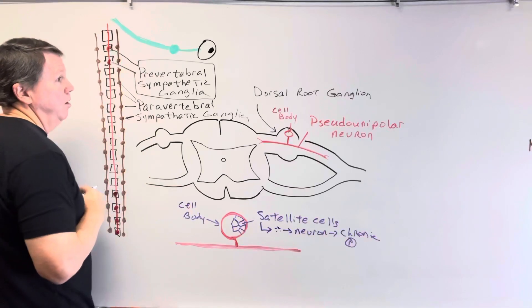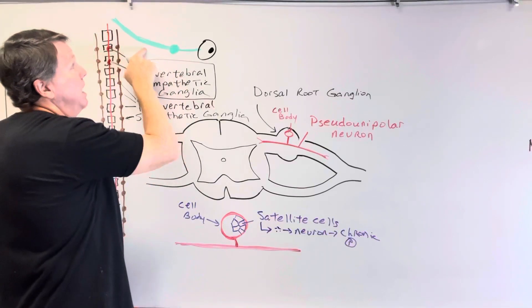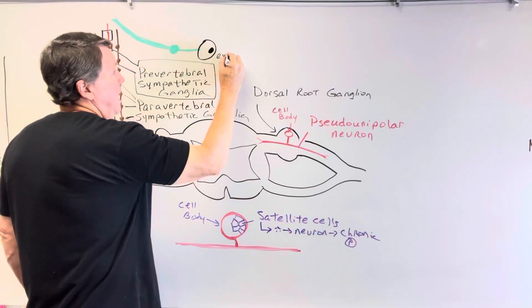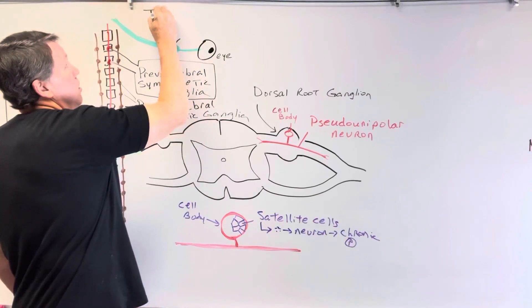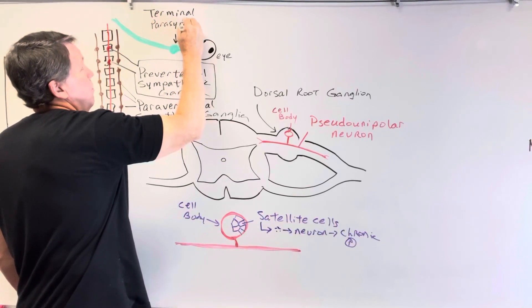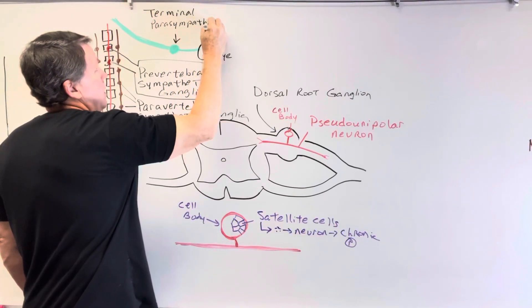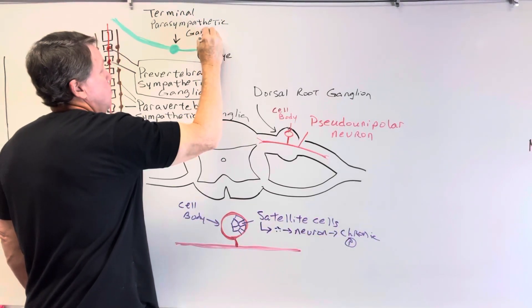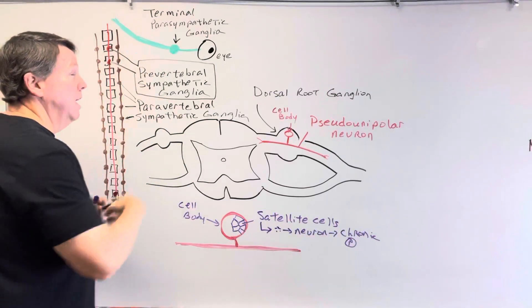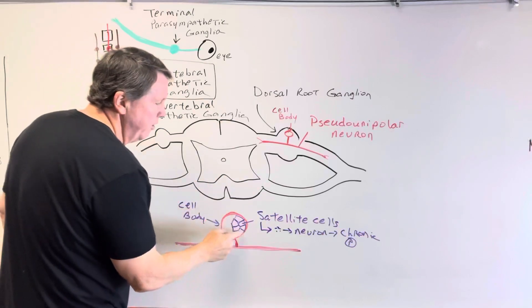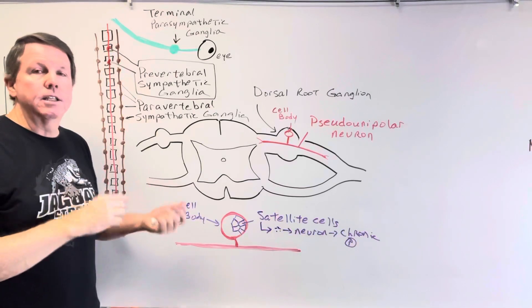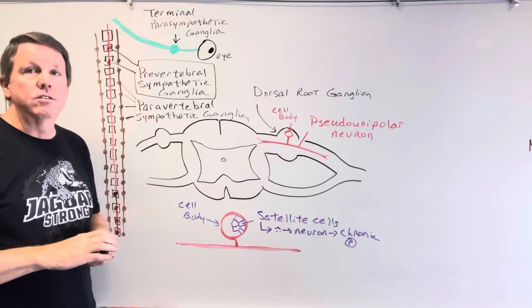They also contain pseudo-unipolar neurons. For the parasympathetic system, the ganglia are located further away and closer to the organ — for example, this would be the terminal parasympathetic ganglia. Again, we're going to have cell bodies in there surrounded by satellite cells. That's basically it for satellite cells. If you enjoyed the video, please hit the like and subscribe button — thank you so much for watching.